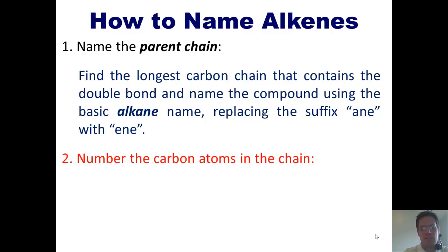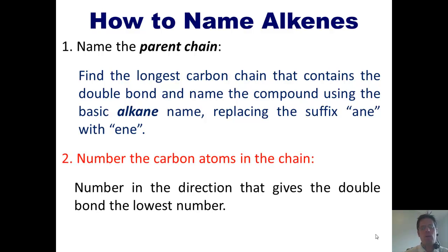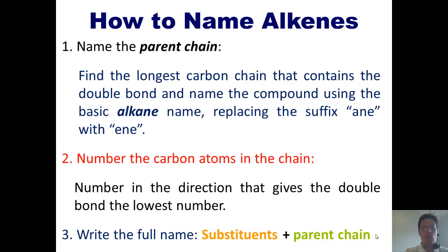Step two, we number the carbon atoms in the chain. Now, we always want to number in the direction that gives the double bond the lowest number. And three, we write the full name, placing any substituents at the beginning of the name and the parent chain name at the end.